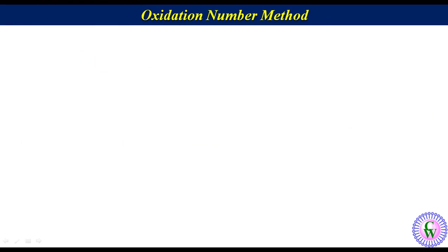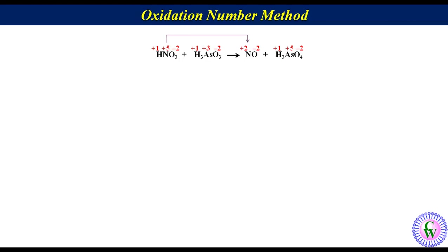Let's take another example where HNO3 reacts with H3AsO3 to produce NO and H3AsO4. On the left side, the oxidation states of hydrogen, nitrogen, oxygen, and arsenic are +1, +5, −2, and +3 respectively. On the right side, they are +1, +2, −2, and +5 respectively. The oxidation number of nitrogen changes from +5 to +2, and arsenic changes from +3 to +5, giving changes of −3 for nitrogen and +2 for arsenic.